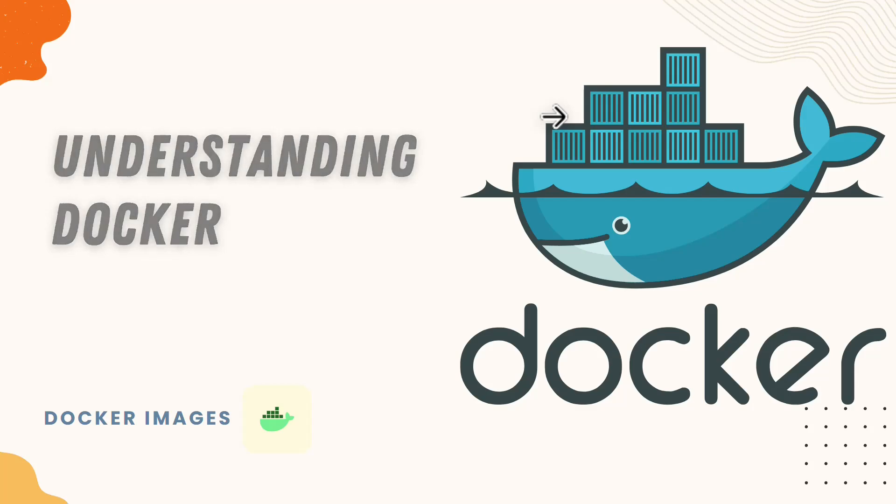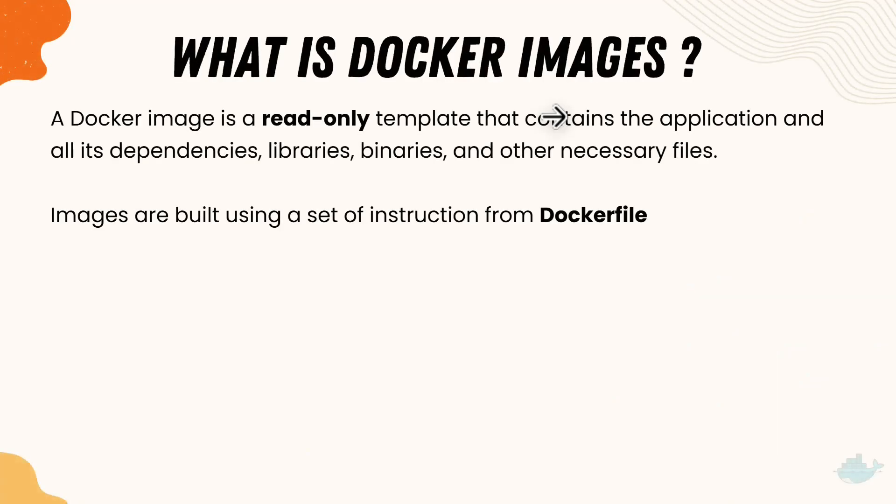In this lecture we'll be talking about Docker images. A Docker image is a read-only template that contains the application and its dependencies, libraries, binaries, and all other necessary files. Images are built using a set of instructions from a Dockerfile. Think of it like a virtual machine image, but instead of holding an entire operating system, it holds only the dependencies, libraries, binaries, and necessary files.